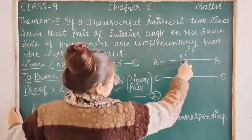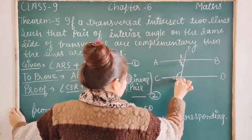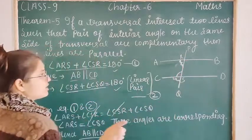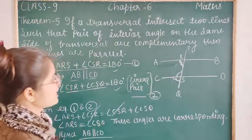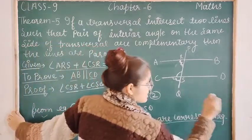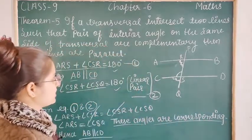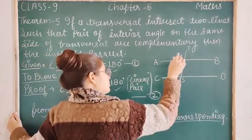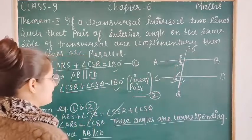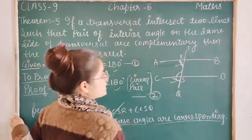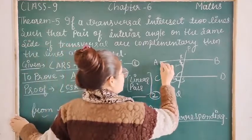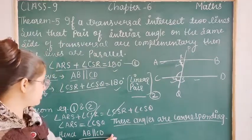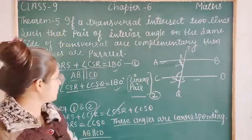Angle ARS equals angle ASQ. These angles are on the same side of the transversal line, so these angles are corresponding angles. If corresponding angles are equal, then the parallel line is established. So here we can prove it — the AB line is parallel.